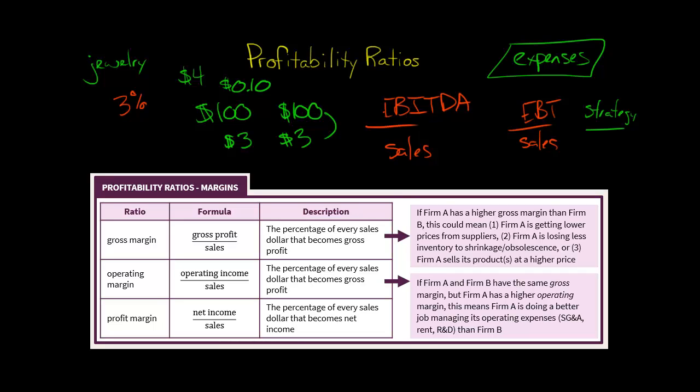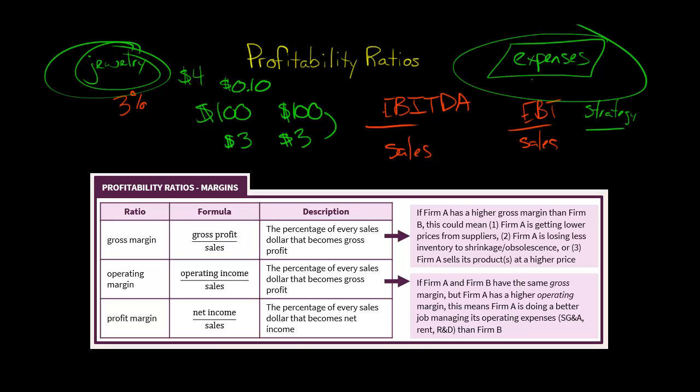The grocery industry makes it up on a lot more volume. They have a lower profit margin — only making maybe $3 of profit for every $100 of groceries sold — but they're selling a lot more groceries than the jewelry store is selling necklaces. Just bear in mind that a higher profit margin can reflect that a company marks up its products more in terms of price. But specifically when analyzing margins in financial statements, we focus a lot on the company's ability to manage its expenses.